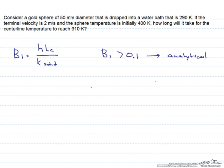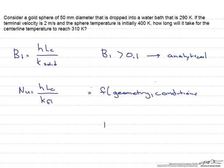In this screencast, we choose a correlation for the Nusselt number, where the Nusselt number is equal to h times the characteristic length divided by the thermal conductivity of the fluid. This Nusselt number is chosen depending on the geometry as well as the conditions of the particular situation. From the Nusselt number, we calculate h, and from h we solve for the Biot number, which tells us which method to use to solve a transient problem.